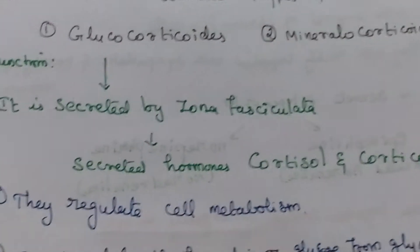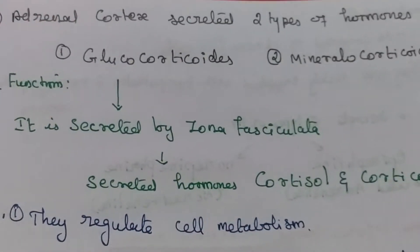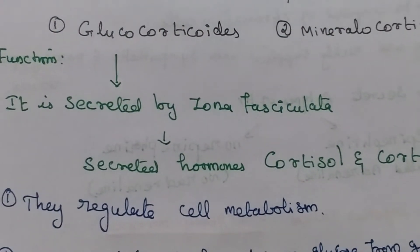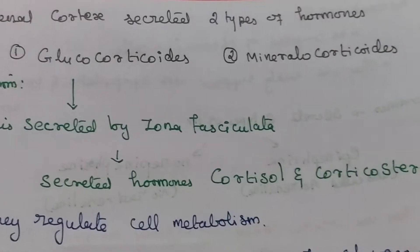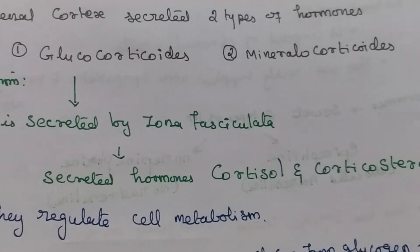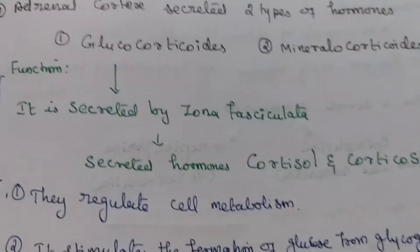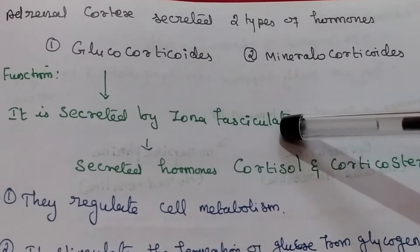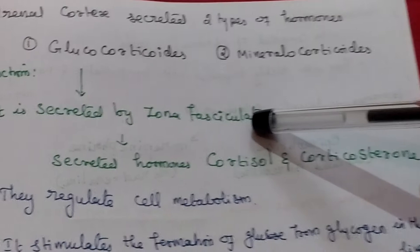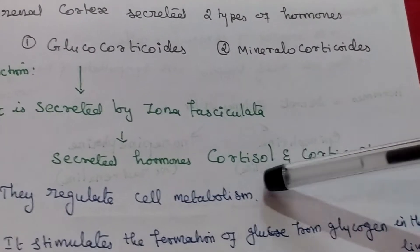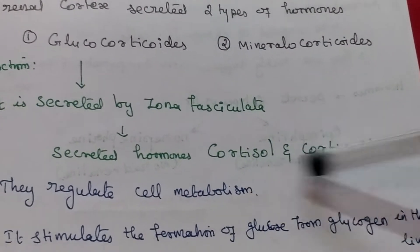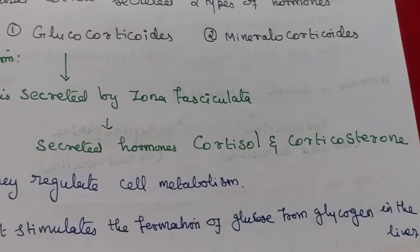The adrenal cortex secretes two types of hormones: glucocorticoids and mineralocorticoids. Glucocorticoids are secreted by the zona fasciculata. The hormones secreted are cortisol and corticosterone.